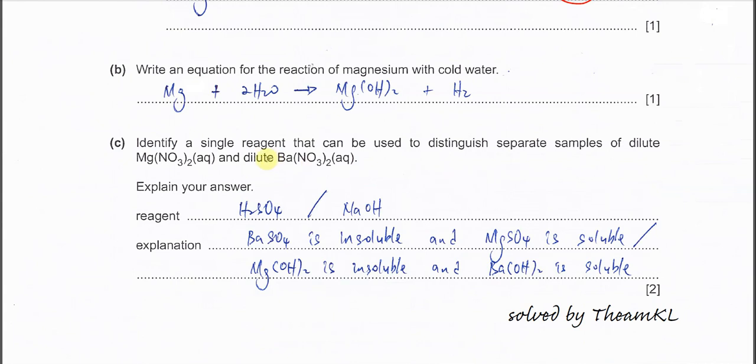Part C, identify a single reagent that can be used to distinguish separate samples of dilute Mg(NO3)2 and dilute Ba(NO3)2. This one is quite easy.